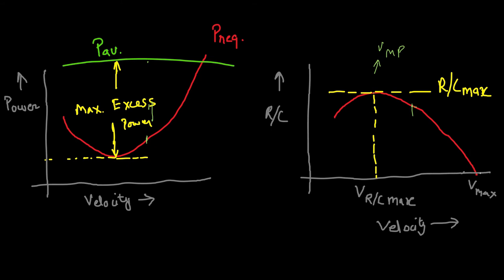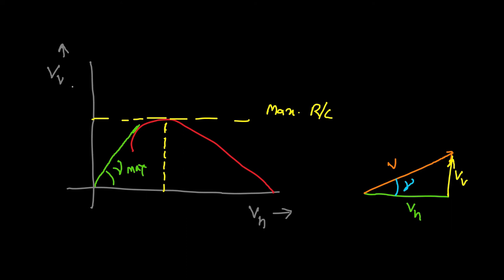The rate of climb decreases as velocity increases beyond the minimum power velocity, and at V-max there is no rate of climb — the aircraft cannot climb at maximum velocity. We may also draw a graph of vertical velocity versus horizontal velocity, with vertical velocity being the rate of climb. This curve is known as the hodograph. A horizontal tangent drawn to the curve identifies the point of maximum rate of climb.